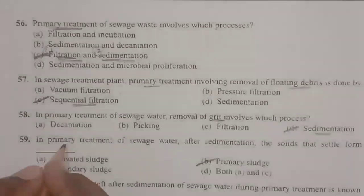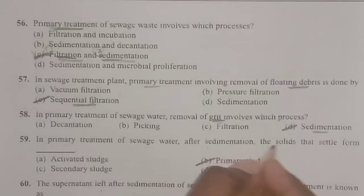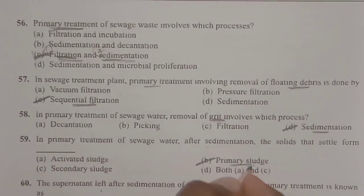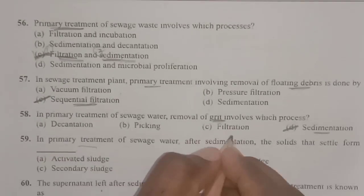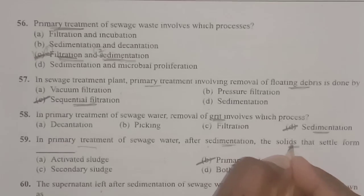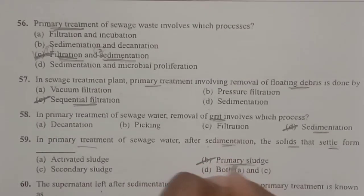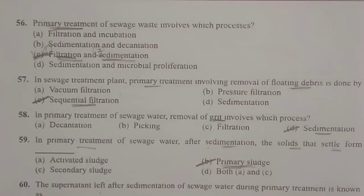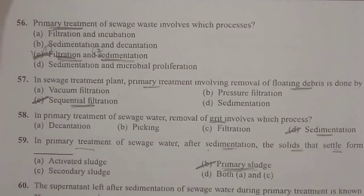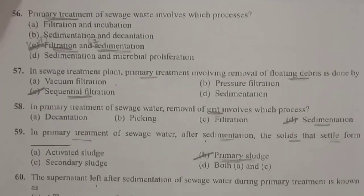Next: in primary treatment of sewage water, after sedimentation, the solids that settle form the primary sludge. During sedimentation, solid materials such as grit particles, soil, and small pebbles settle at the bottom of the tank to form primary sludge. Primary sludge is the end product of primary treatment, mainly containing pebbles, soil particles, etc.